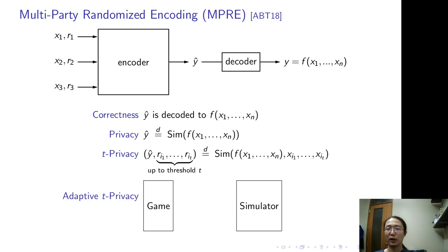In this work, we also consider adaptive security. Give the simulator private input, it simulates the local randomness of the corresponding party. Give the simulator the function output, it simulates the encoding. And you can repeat and ask for up to T parties.